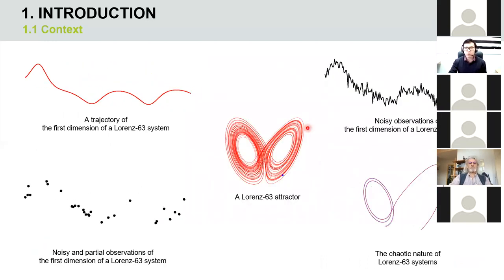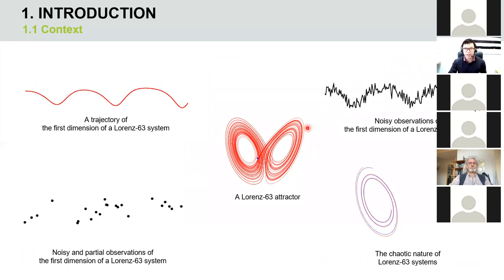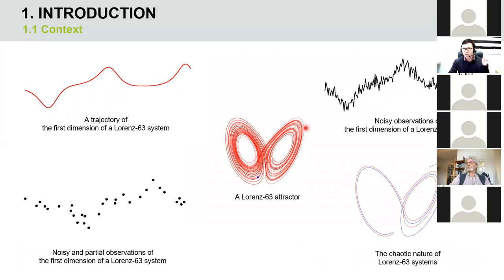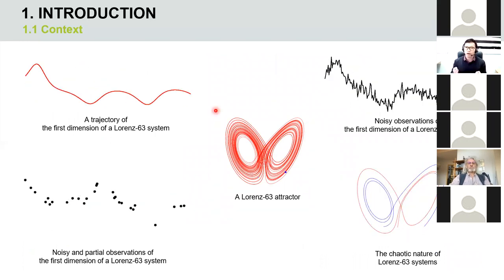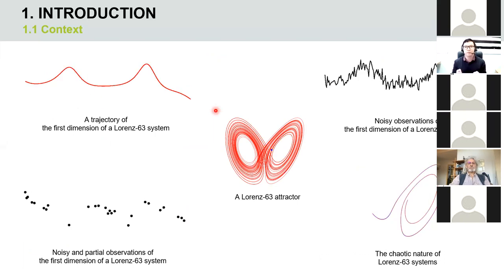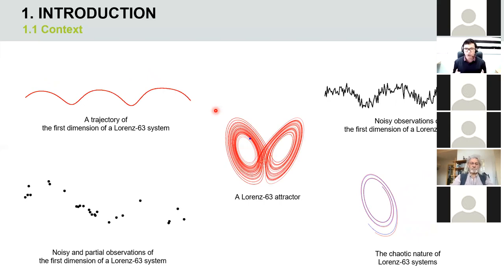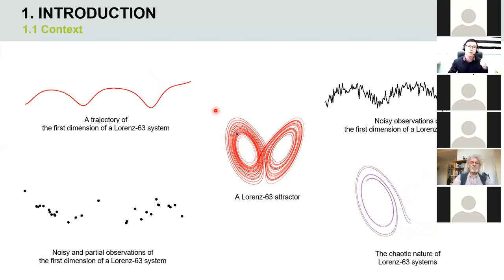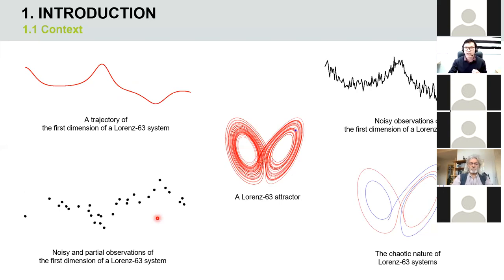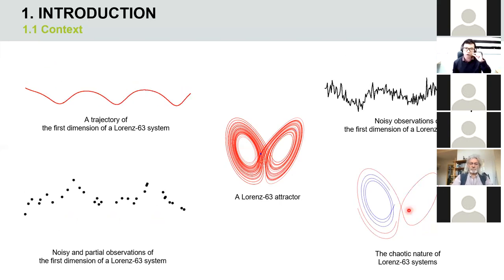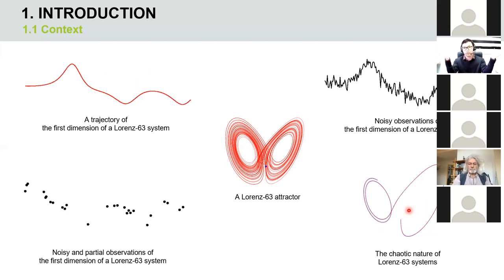Unfortunately, modeling and analyzing time series are difficult. Let's take the Lorenz 63 system as an example. First of all, we don't know the governing law of the system. Even when we know the governing law, we still need the true state of the system to forecast the future. Unfortunately, most of the time we only have noisy and irregular observations. Nevertheless, the system can also be chaotic, which means just a small difference in the initial condition can lead to two completely different trajectories.